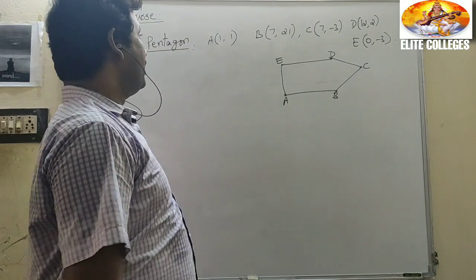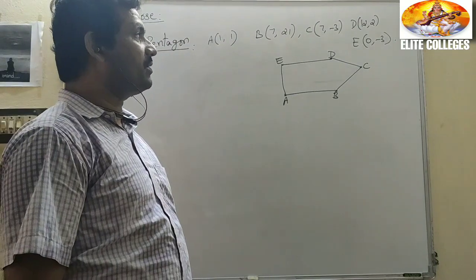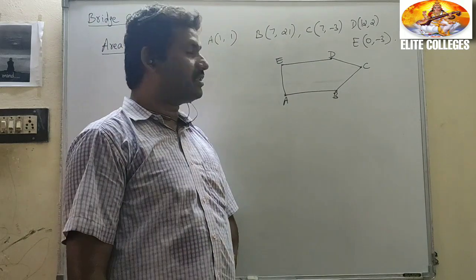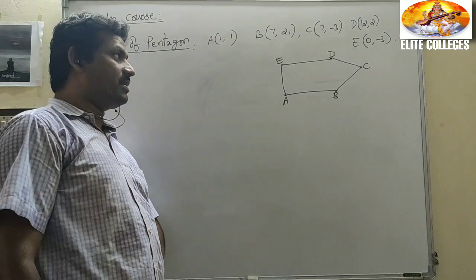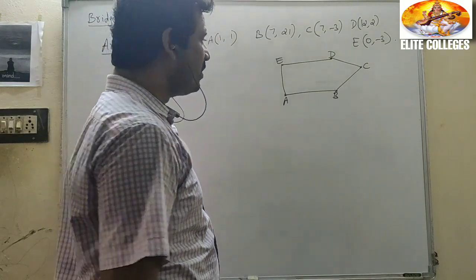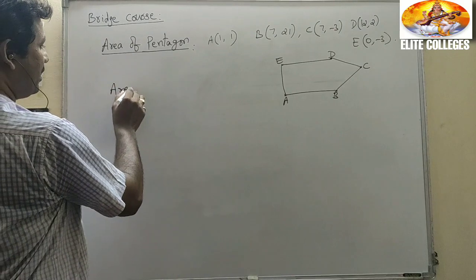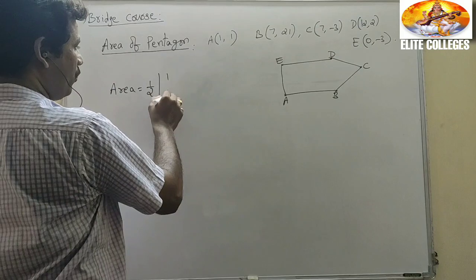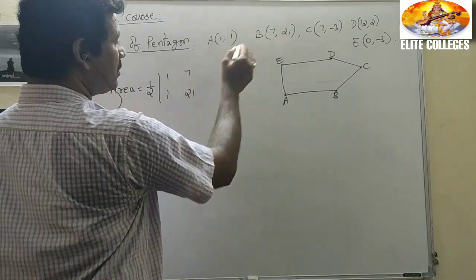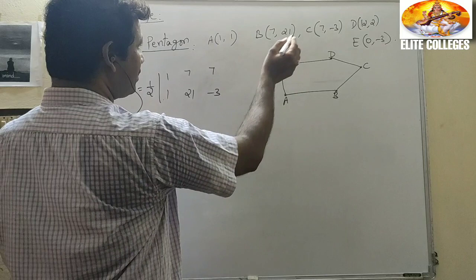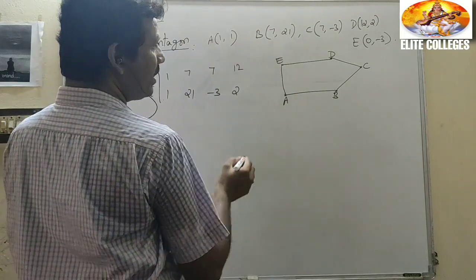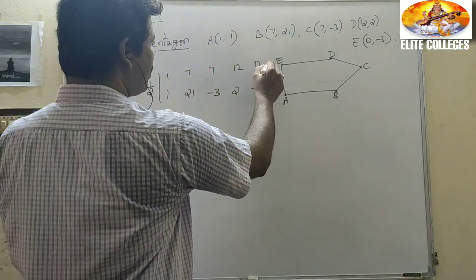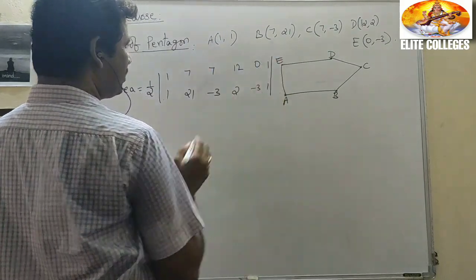Now, area of a pentagon — that means 5 vertices are given. This is the 28th problem of the assignments. The area equals ½ |mod|. Write the points: (1,1), (7,21), (7,-3), (12,3), (0,-3), and then again the first point (1,1).